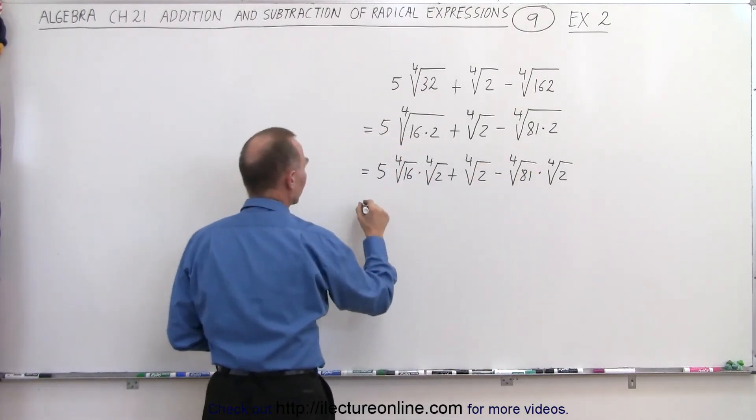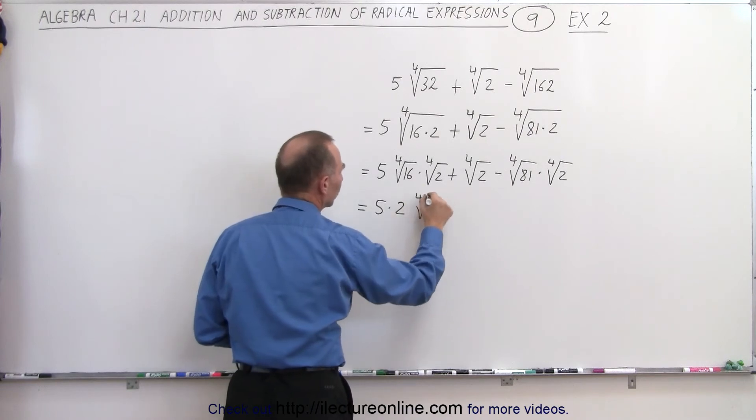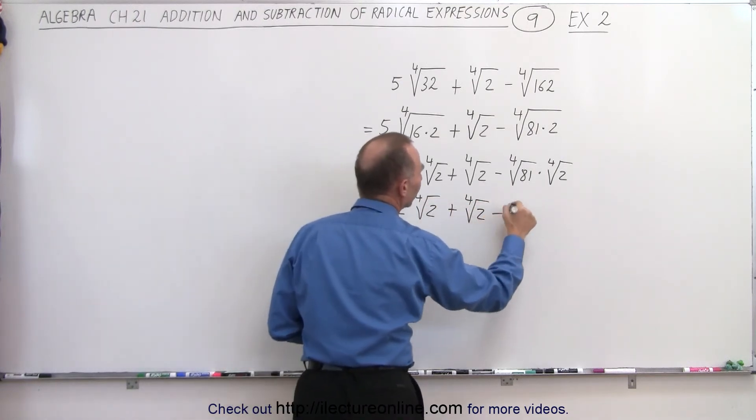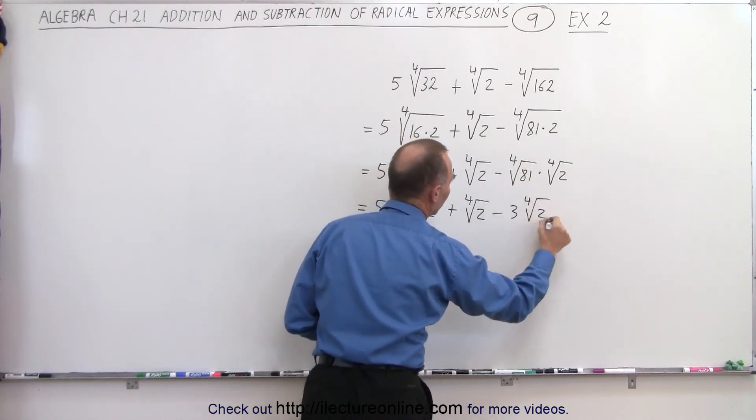So this is equal to 5 times 2 times the fourth root of 2 plus the fourth root of 2 minus, and this is equal to 3 times the fourth root of 2.